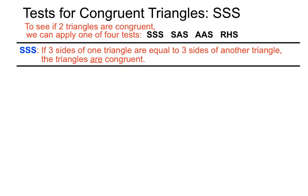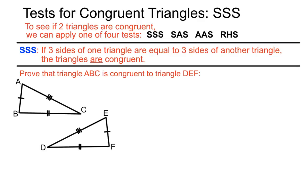This one particularly, the SSS test for congruent triangles, says that if three sides of one triangle are equal to three sides of another triangle, then we can say that those two triangles are congruent. Let's have a look.